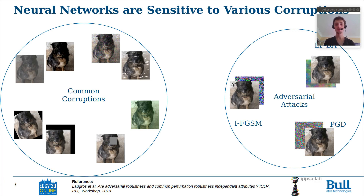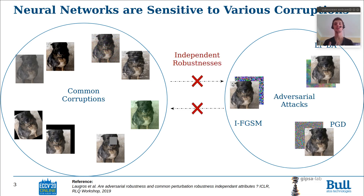A great issue with robustness of neural networks is that it has been shown that addressing the robustness towards common corruptions doesn't imply addressing the robustness towards adversarial attacks. And conversely, being robust to adversarial examples doesn't imply being robust to common corruptions. But the problem is even more complicated.